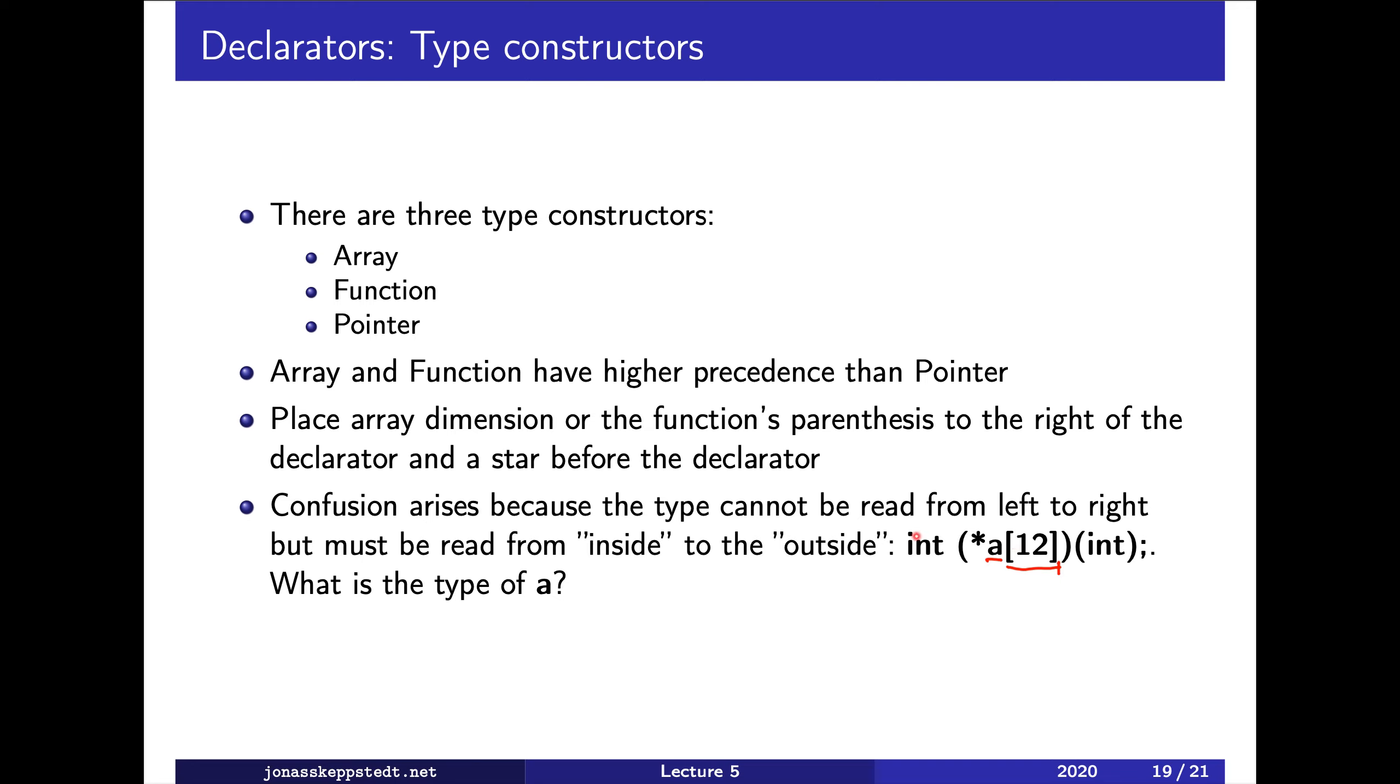So then we wonder of what type. We continue looking for things to the right, and there we don't find anything interesting, so we skip this and this. So what we have concluded now, A is an array of pointers.